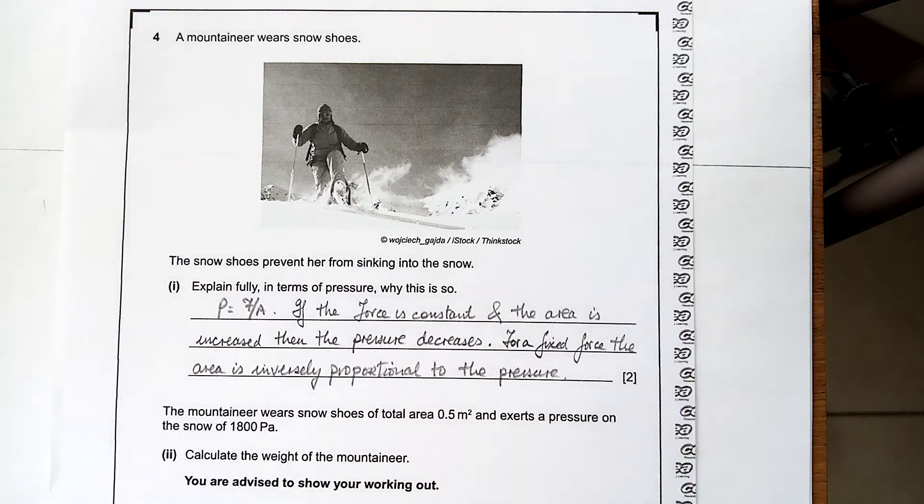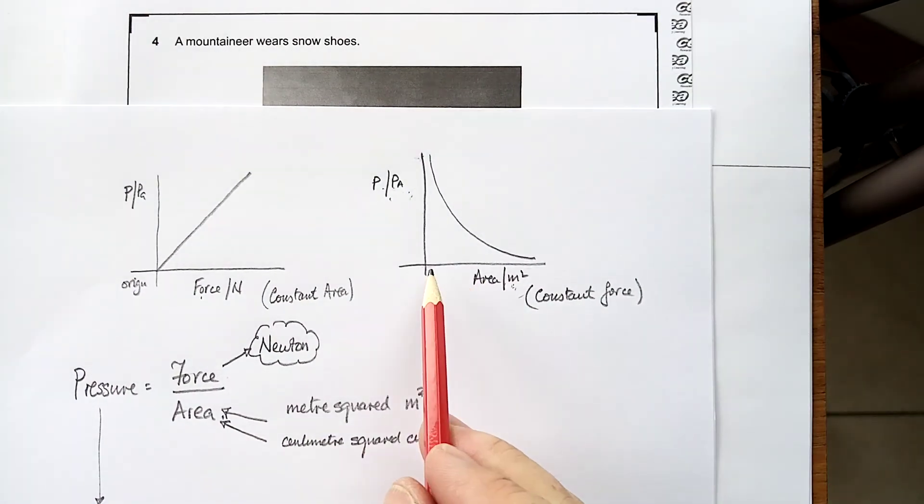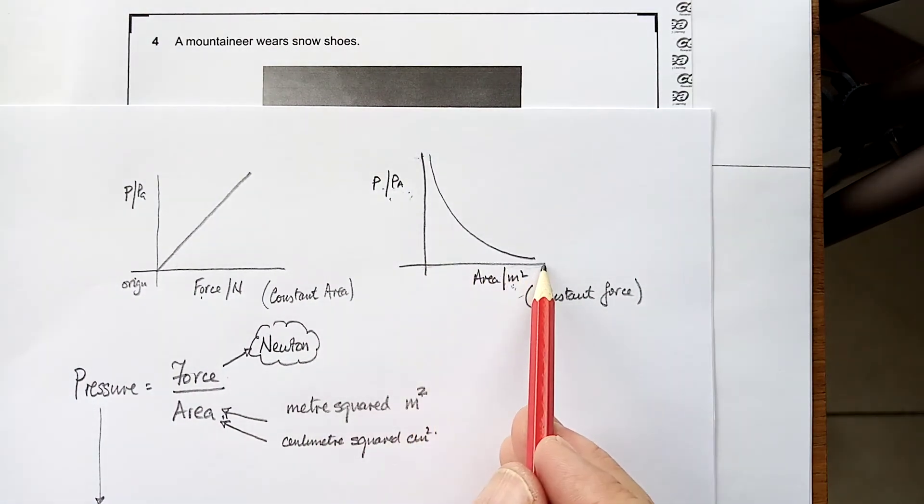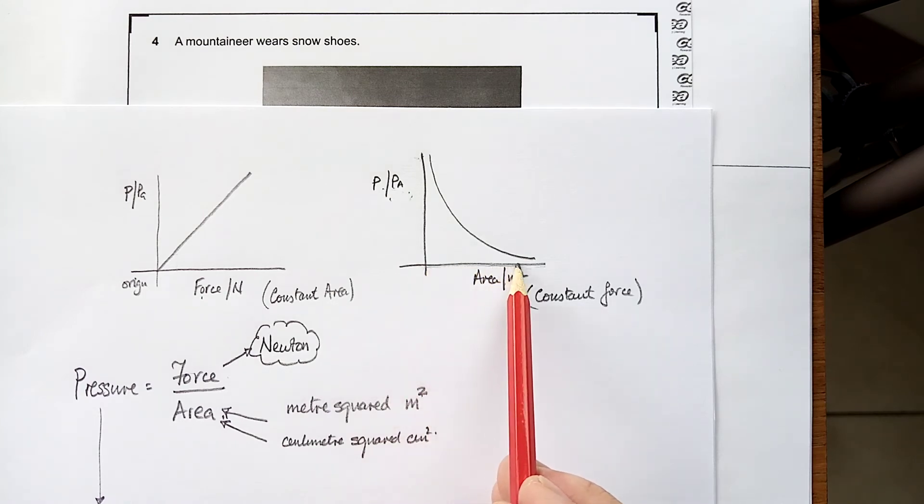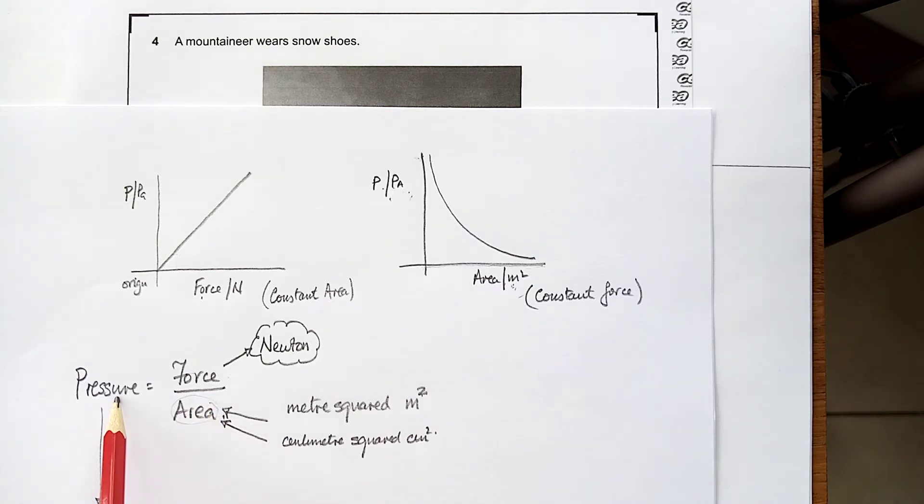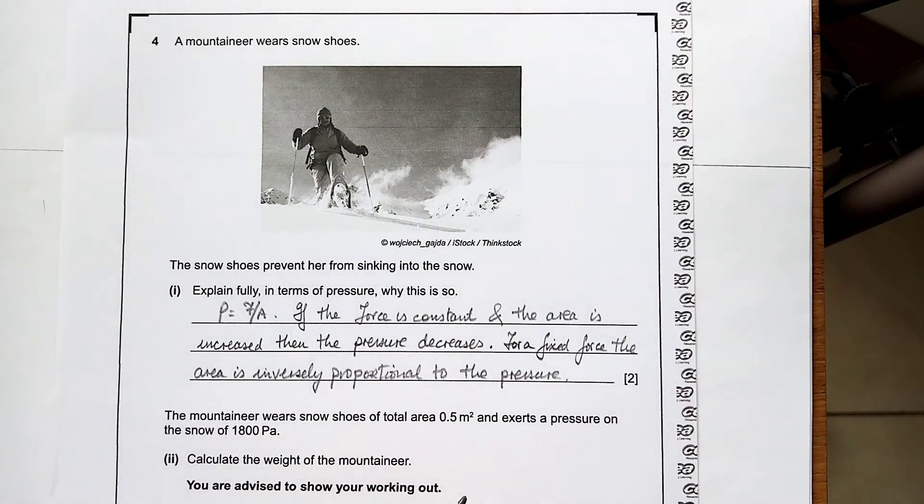Always remember the old KISS routine. Keep it simple, stupid. If you increase the area, the pressure comes down. If you make that number bigger, that number gets smaller. If you make that number smaller, that number gets bigger. It's an inverse relationship. Whereas, the pressure and force is directly proportional.